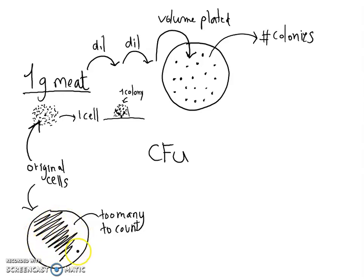To be able to identify the exact number, there would be a whole carpet of cells if they were plated on an agar plate, too many to count. That's why we created these serial dilutions.